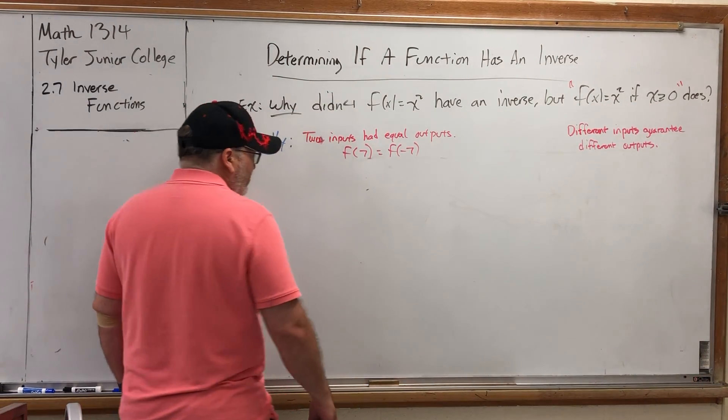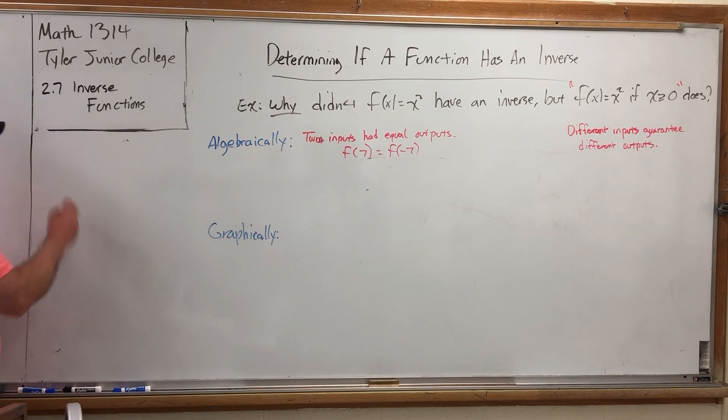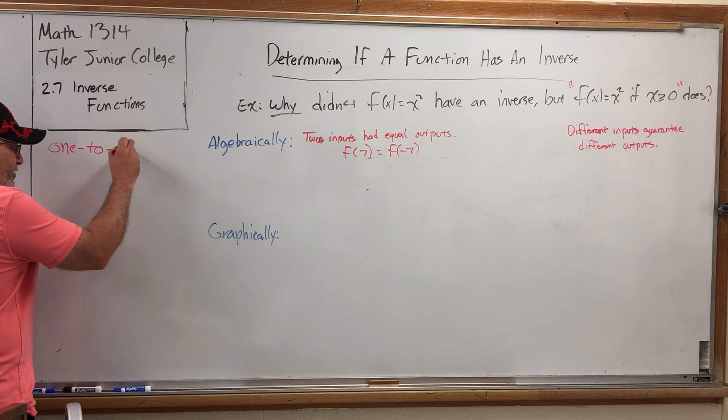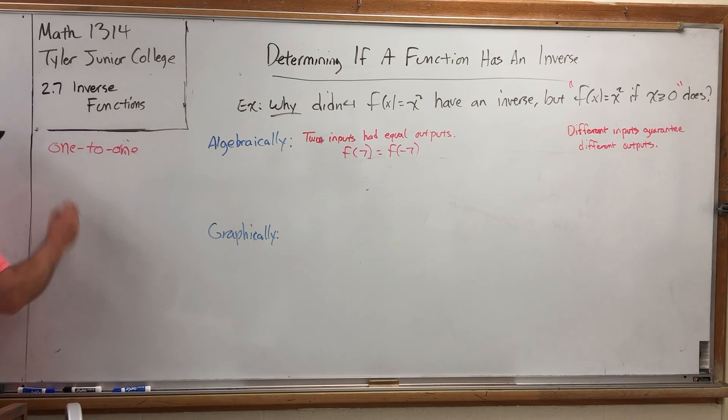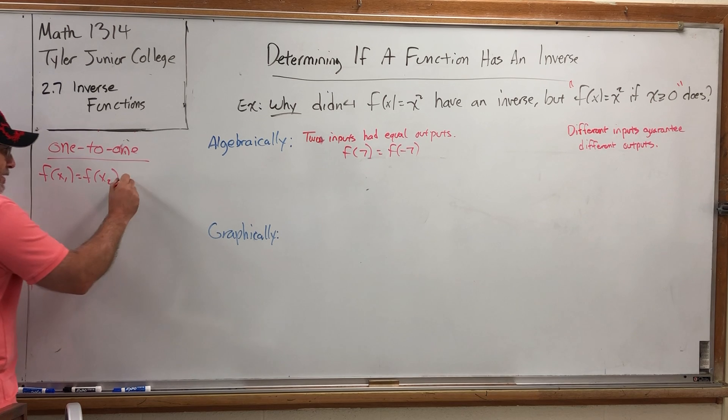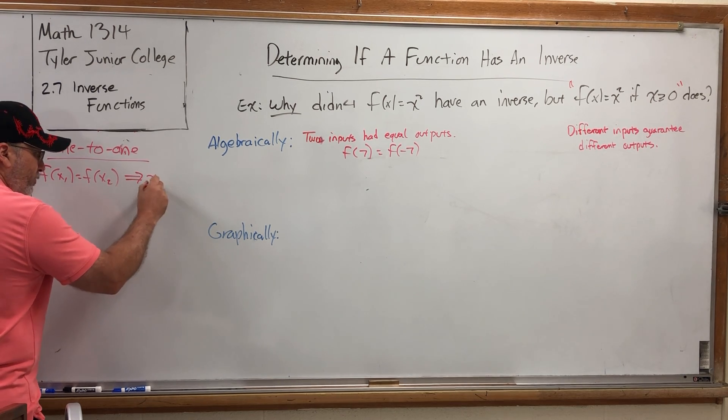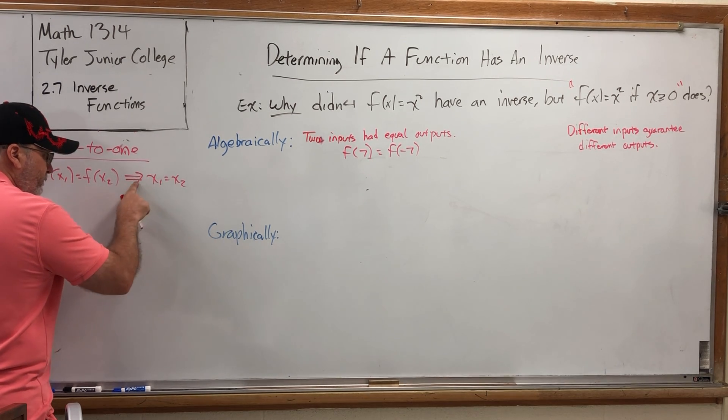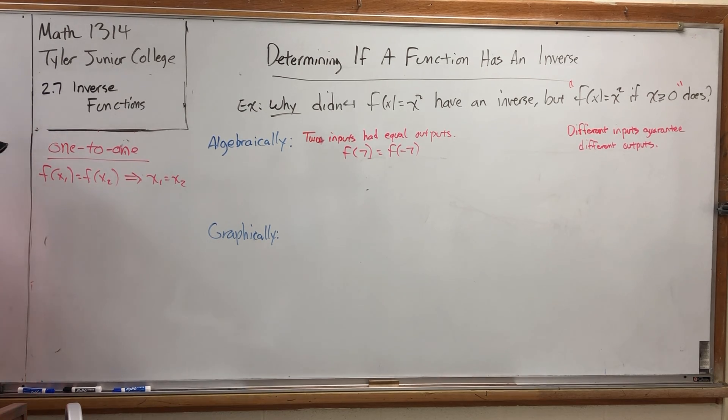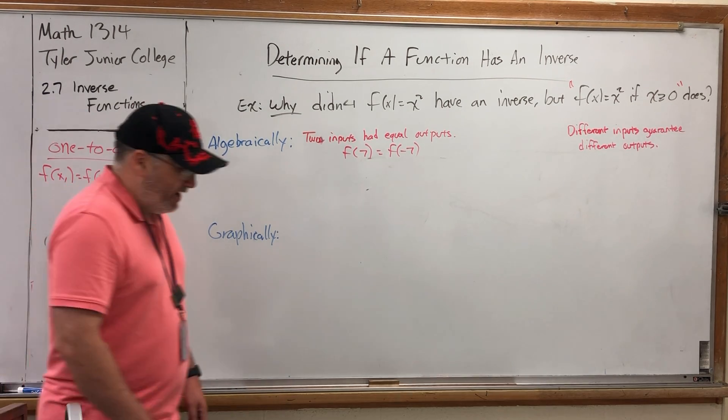Think of it as an adjective. A function is one-to-one if equal outputs, so f of x1 equals f of x2, implies equal inputs. In other words, the only way two things can come out the same is if they went in the same.